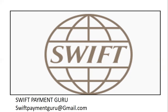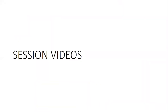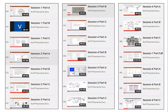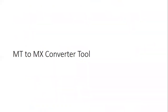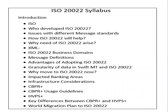The email address is S-W-I-F-T-P-A-Y-M-E-N-T-G-U-R-U at gmail.com. The course includes session videos; the ISO 20022 video package costs 10,000 rupees and includes approximately 20 hours of video content. You also receive an MT-to-MX converter tool where you can populate MT data in an Excel sheet and export it to see the equivalent XML-based ISO 20022 messages.